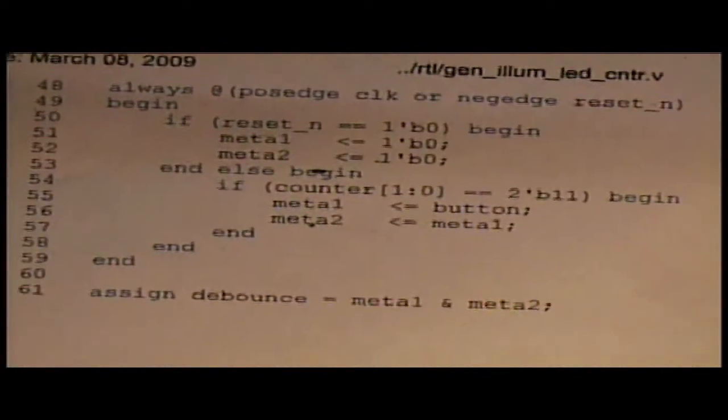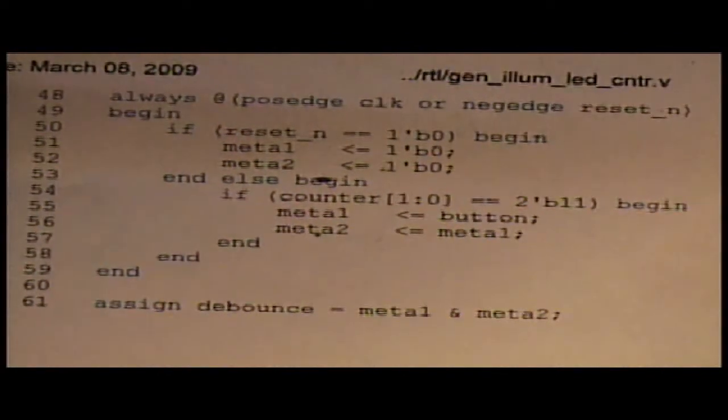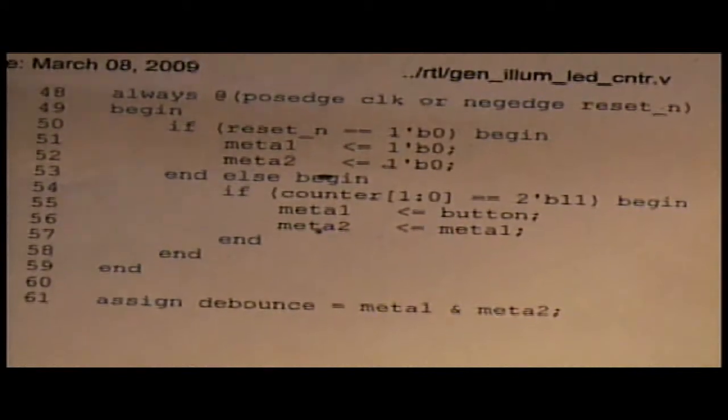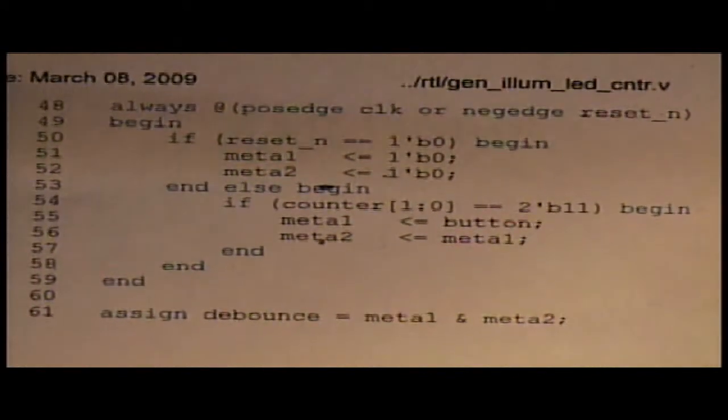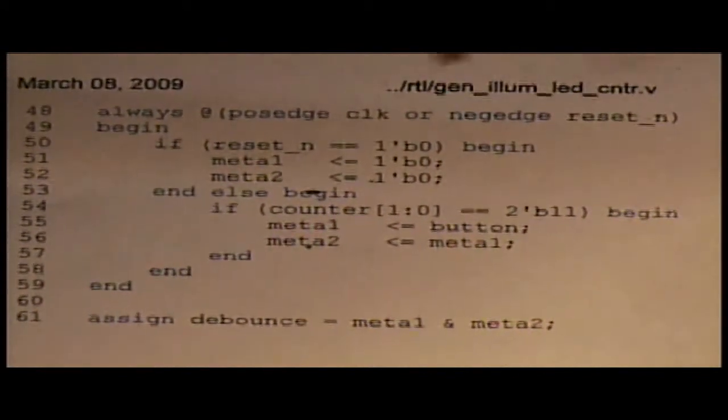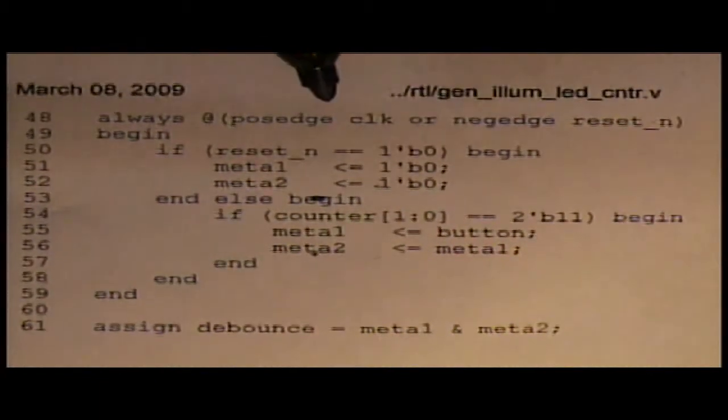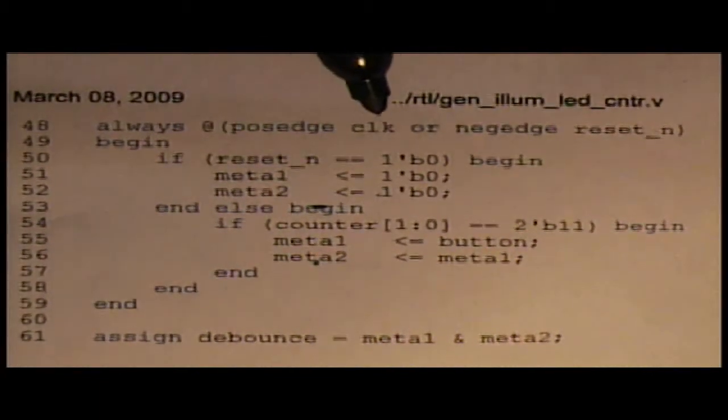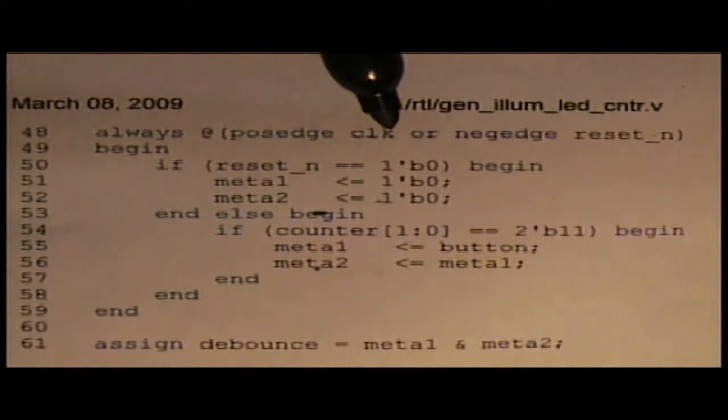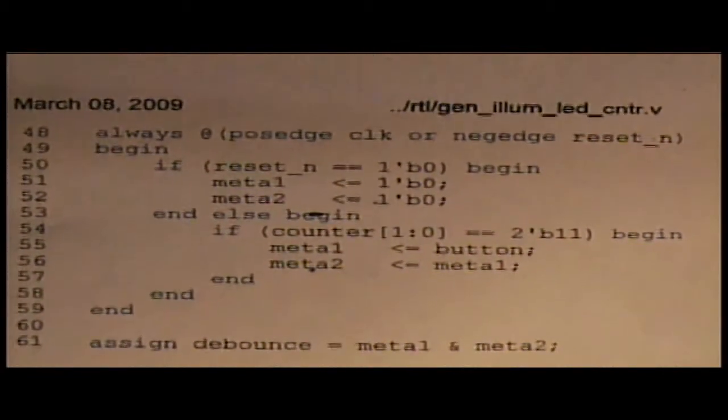Okay, so for you guys that have been following before, you'll recognize the clocked process, the always block. This is Verilog that I'm using in this example. So always at the positive edge of clock, every time the clock rises I'm going to do something that's going to make a flip-flop.